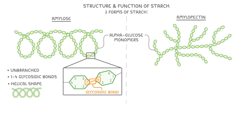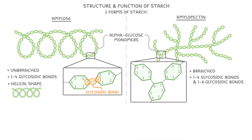Amylopectin, on the other hand, is branched. This is because it has both 1,4-glycosidic bonds and 1,6-glycosidic bonds. Zooming in, you can see the bonds form between both carbons 1 and 4, but also sometimes between carbons 1 and 6, and this is what gives amylopectin its side branches.